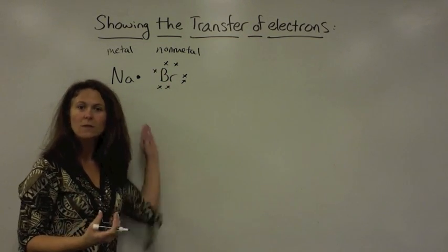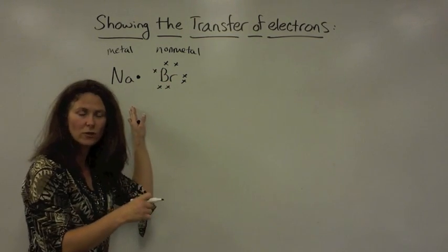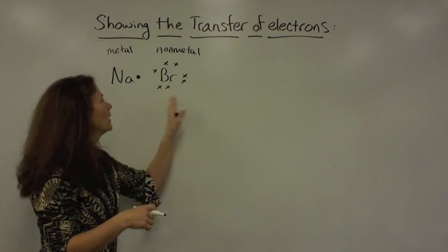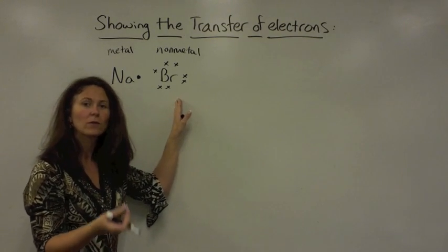We know that sodium is the metal and wants to lose the outer electron, so its previous energy level has eight valence electrons. Bromine wants to gain the electron in order to be stable and happy.